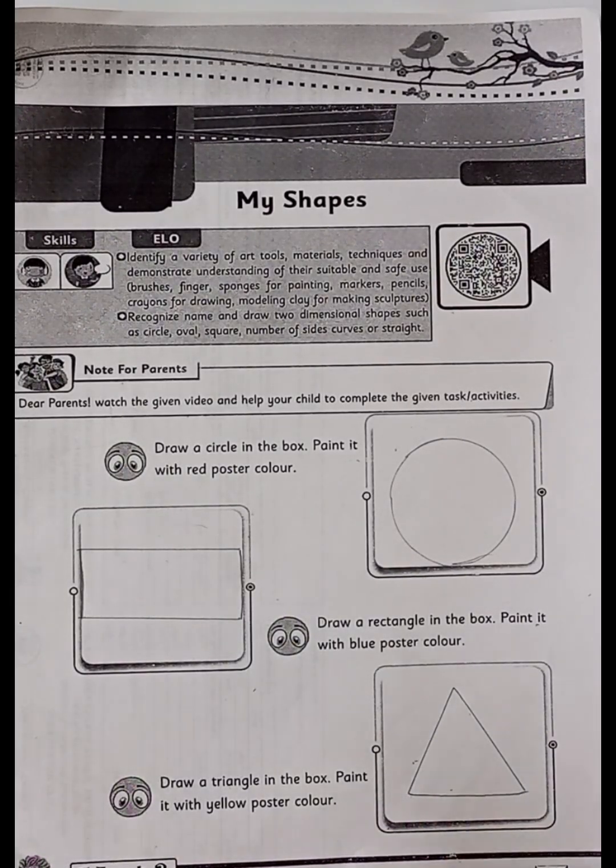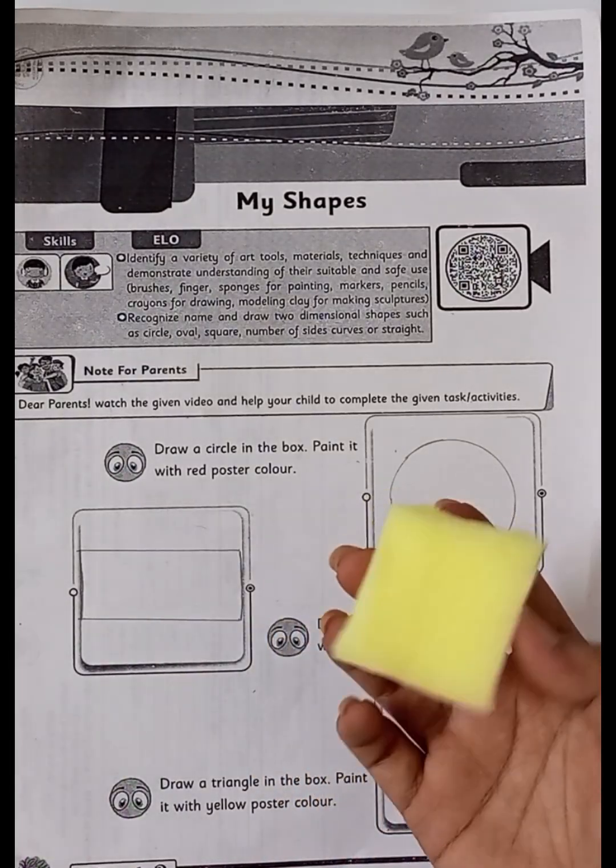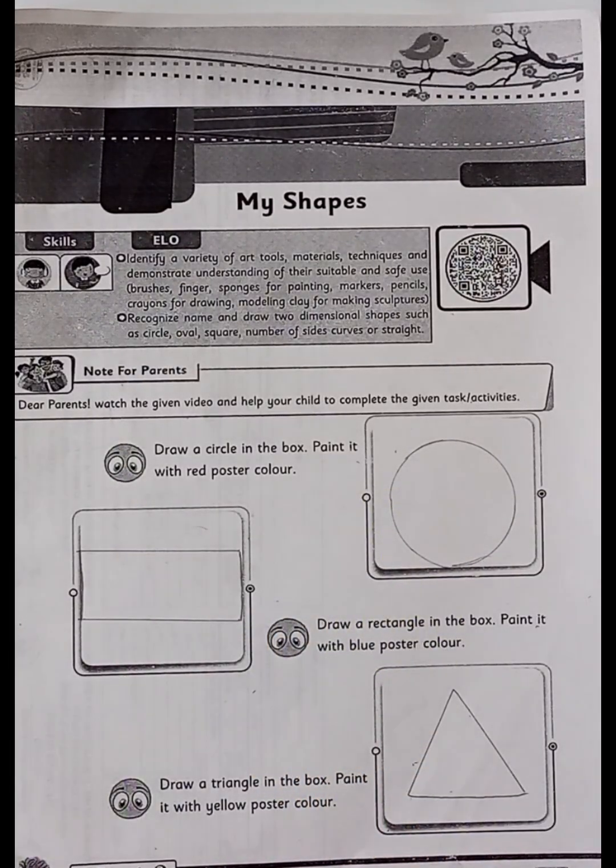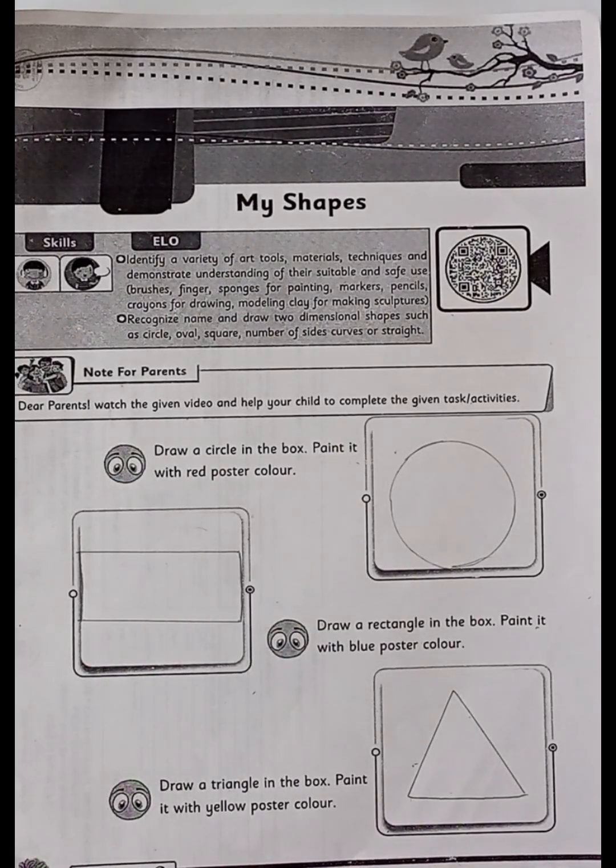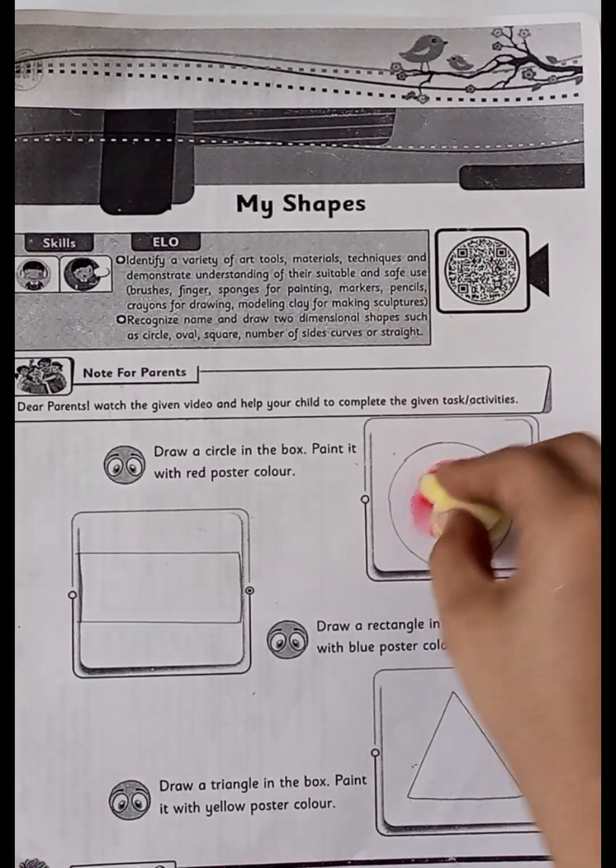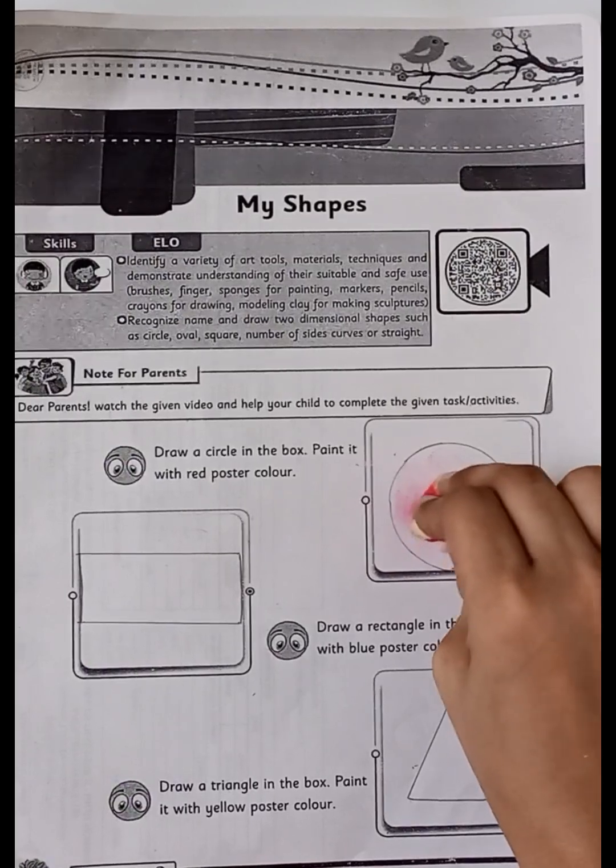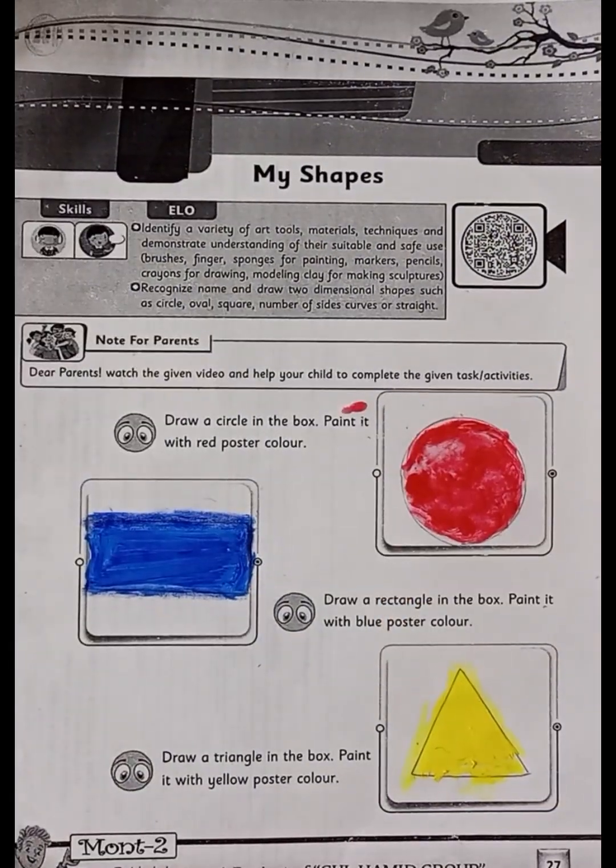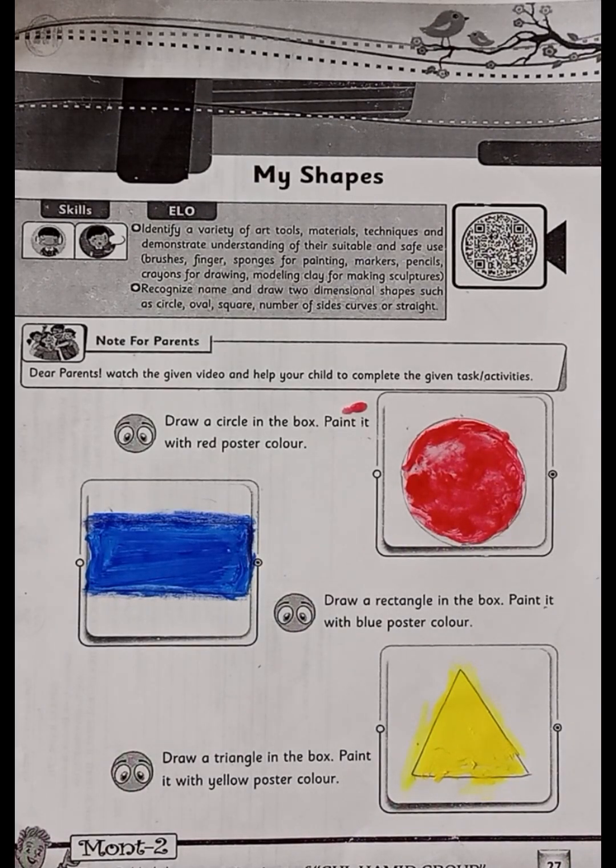When we have to use colors, here I have a sponge. I will dip it in red poster color. So we have to carefully dip the sponge in the shape so that these colors will spread out. So I have done my colors with sponge help. I hope that you will understand the activity well and you will also finish the task well. Allah hafiz.